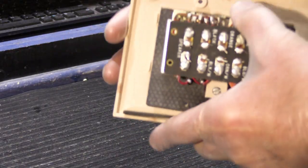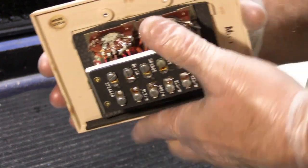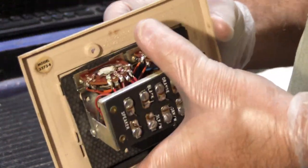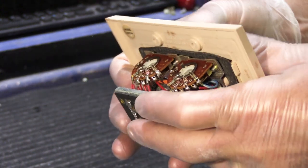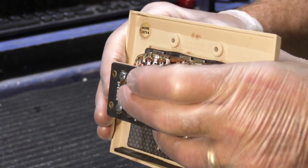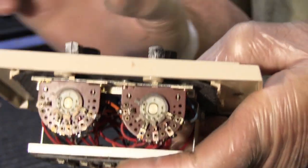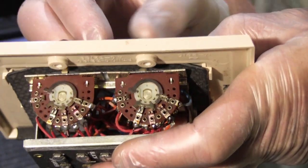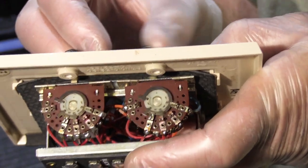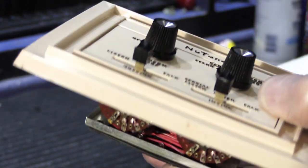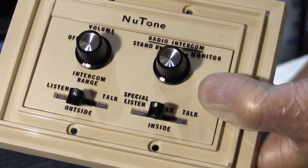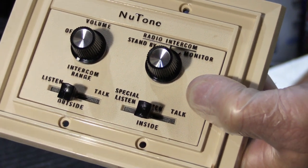What we're interested in here more than anything else are the two intercom switches because what happens to these over time is they become oxidized and the little contacts don't make good connections, and then the intercom doesn't really work the way it's supposed to. Let me go ahead and take this apart and then I'm going to show you how we do a really serious cleaning on this.